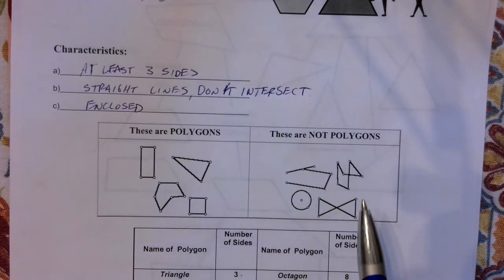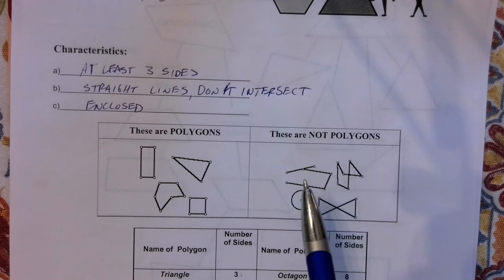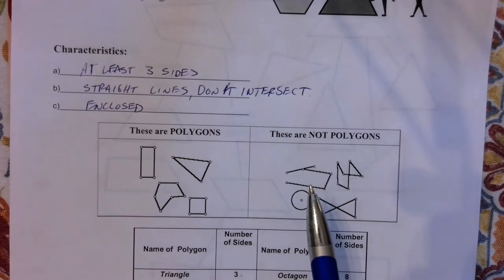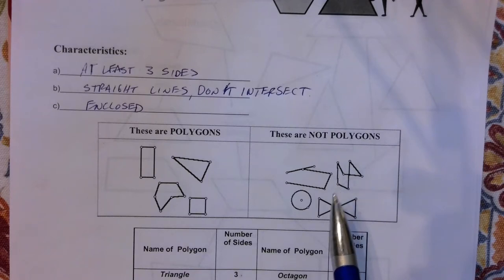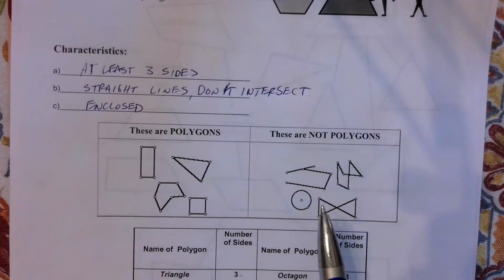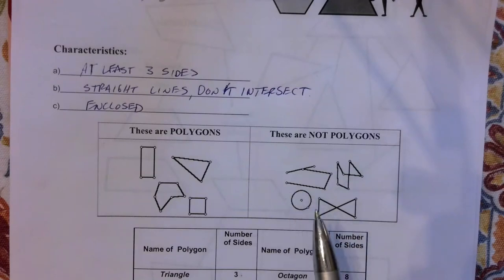These are not polygons, and here's why. This one is not because it is not enclosed. This one's not because the lines intersect. This one's not because the lines intersect. And this one's not because we don't have curved lines with polygons — so a circle is not a polygon.